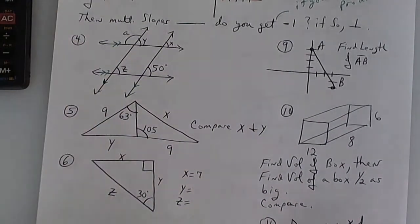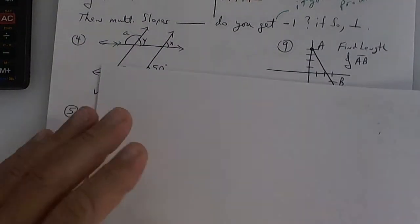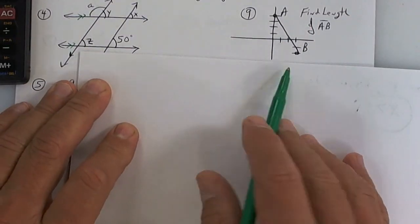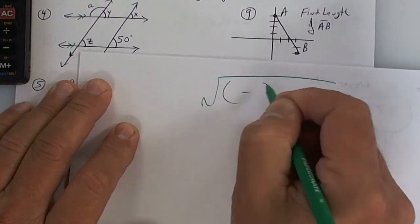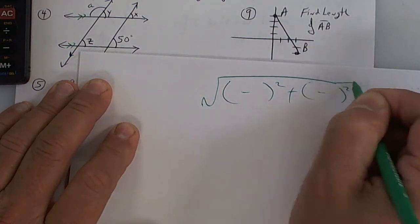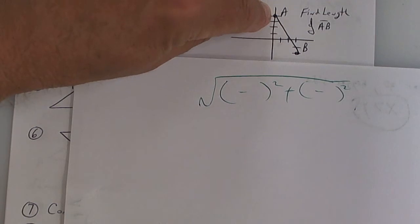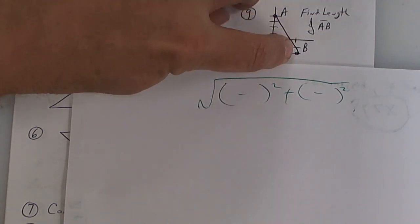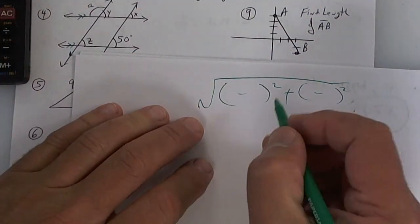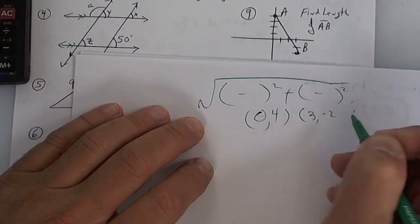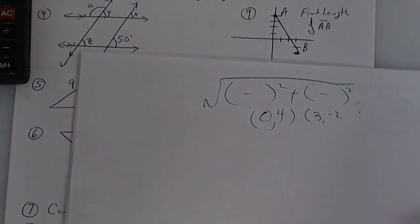Alright, we've got a little bit more time. Number nine. Distance formula. I'm not going to sit here and waste your time with distance formula, but that's what that is. Remember, if you can't write the point, you can't work the problem. So don't mess up on the point. This one is 0, 4. This one is 3, negative 2. And then do the distance.